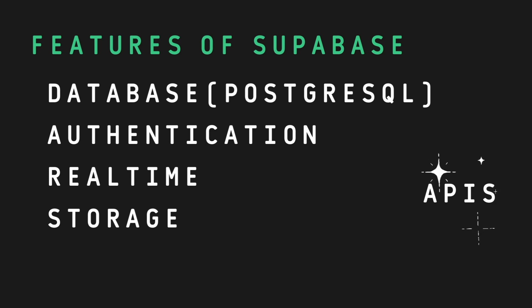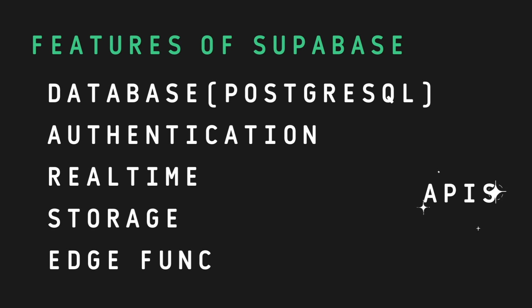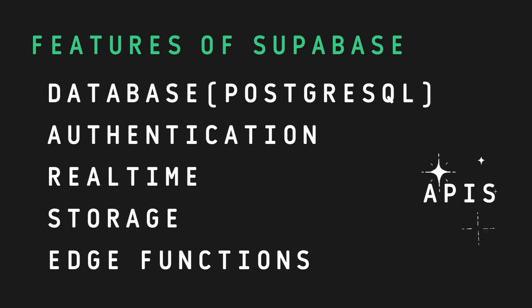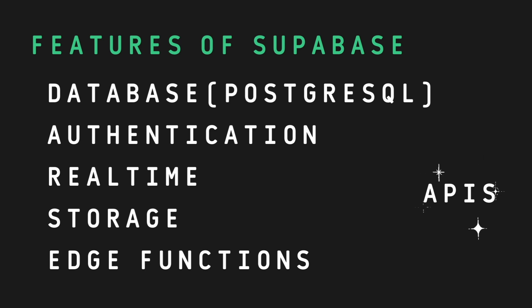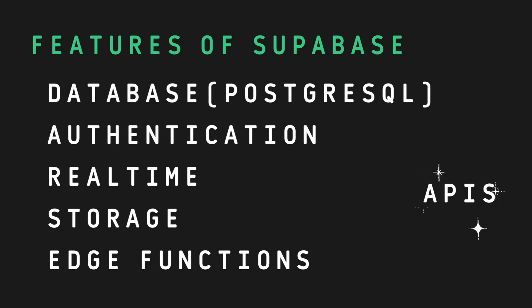Lastly, Superbase also offers edge functions, which are serverless functions that run at the edge, meaning closer to your users. These are great for tasks like processing webhooks, handling background jobs, or running custom backend logic. Since they run at the edge, they provide lower latency and faster execution times, making your apps more responsive.